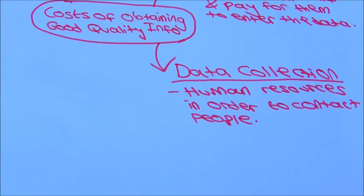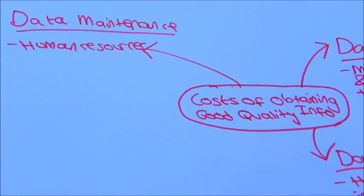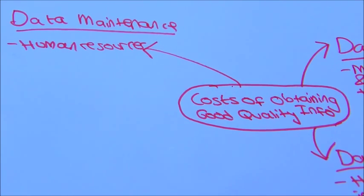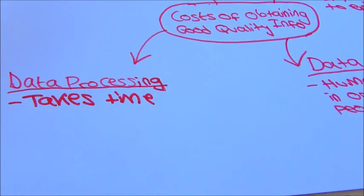When maintaining the data, human resources must keep the data up to date and data also must be backed up for security purposes. Data processing takes a long time to process the data.